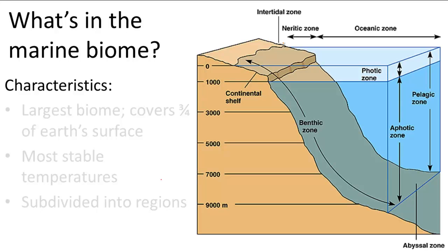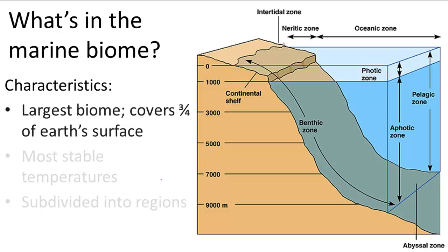The marine biome is the largest of all biomes. This is pretty obvious because when you look at a globe, you can see that the ocean covers about three quarters of its surface. Because of water's ability to absorb a great deal of heat without changing temperature, this biome also has the most stable temperatures.